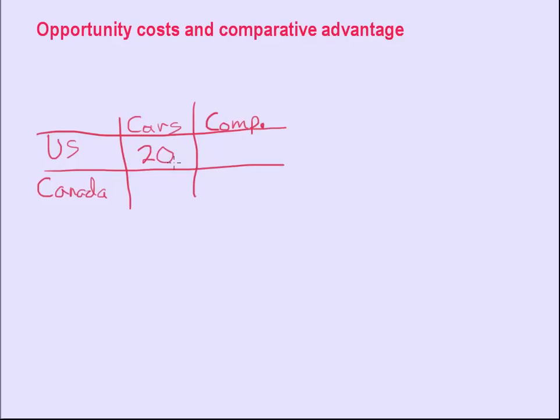So let's say that's 20. Let's say this is 40. So if we're more productive than Canada, instead of 20, let's put 5 down here. And instead of 40, let's put 20 down here. In other words, the US is four times as productive in producing cars. Four times five is 20. Two times 20 is 40. So we're twice as productive in producing computers.